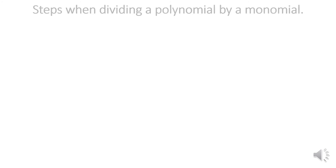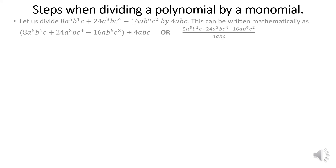The next thing we are going to look at is dividing a polynomial by a monomial. We are going to divide 8a⁵b¹c + 24a³bc⁴ − 16abc⁶c² by 4a. Those are the different ways in which we can write that expression.